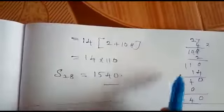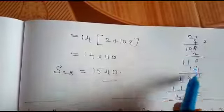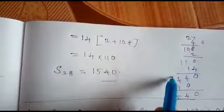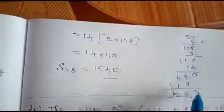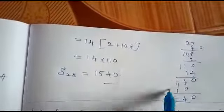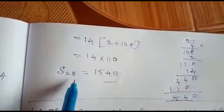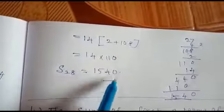Next, what is 14 into 110? 14 into 110. Zero ones are zero, 1 four is 4, 1 four is 4. Next, 1 into 0 is 0, 1 one is 1, 1 one is 1. So 1540. So the sum of first 28 terms of this sequence is 1540.